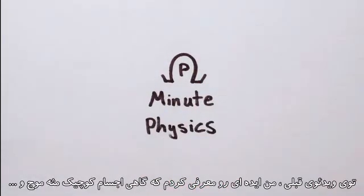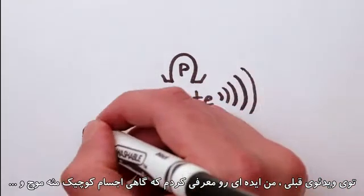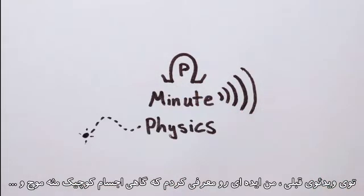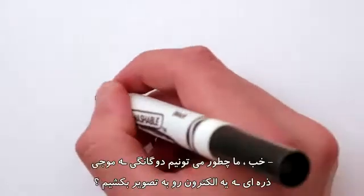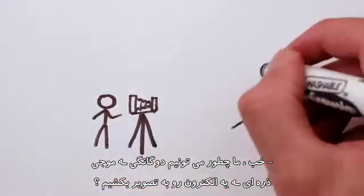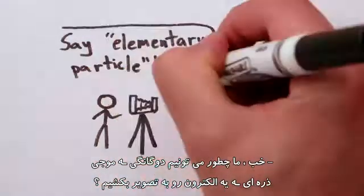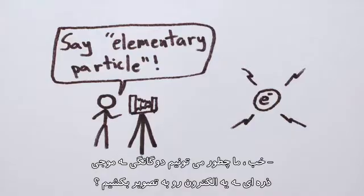In the last video, I introduced the idea that really small things act sometimes like waves and sometimes like particles. So how can we actually picture this wave-particle duality of an electron?